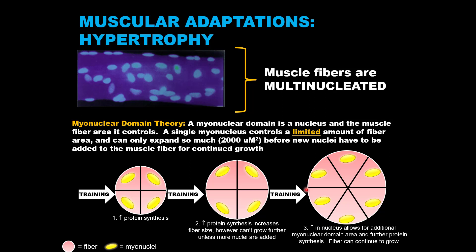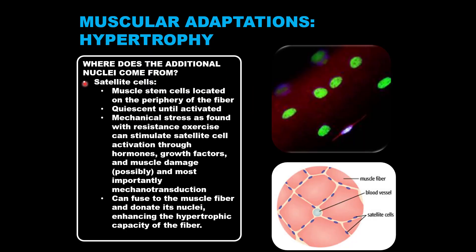So where does this additional myonuclei come from? It comes from specialized muscle stem cells called satellite cells. These cells are called satellite cells because they hang out on the edges of the muscle fiber, sandwiched between the two outer membrane layers. These satellite cells are dormant, meaning they're inactive, which means there needs to be some kind of stimulus to activate them.